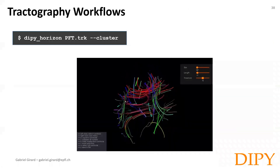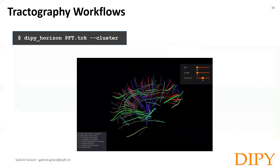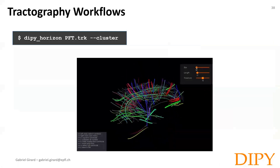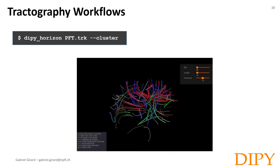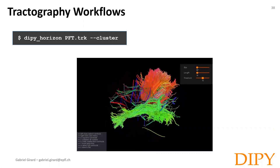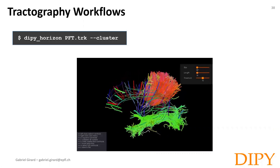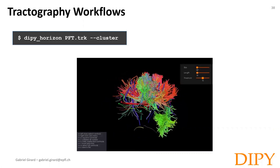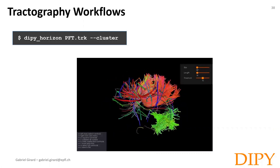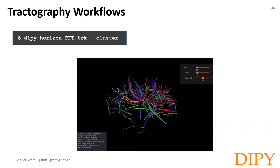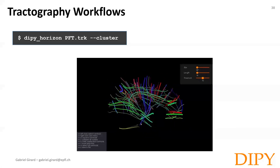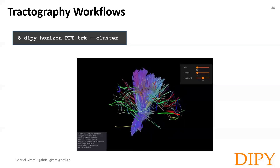Again, we can visualize the resulting tractogram. The tubes are the centroids of bundles of streamlines — the larger they are, the more streamlines are in the bundle. We can filter the centroids visible by length or by size. You can also expand clusters to see all the generated streamlines. In red, the part of the corpus callosum. In green, the inferior fronto-occipital fasciculus. And here in blue, the corticospinal tract.